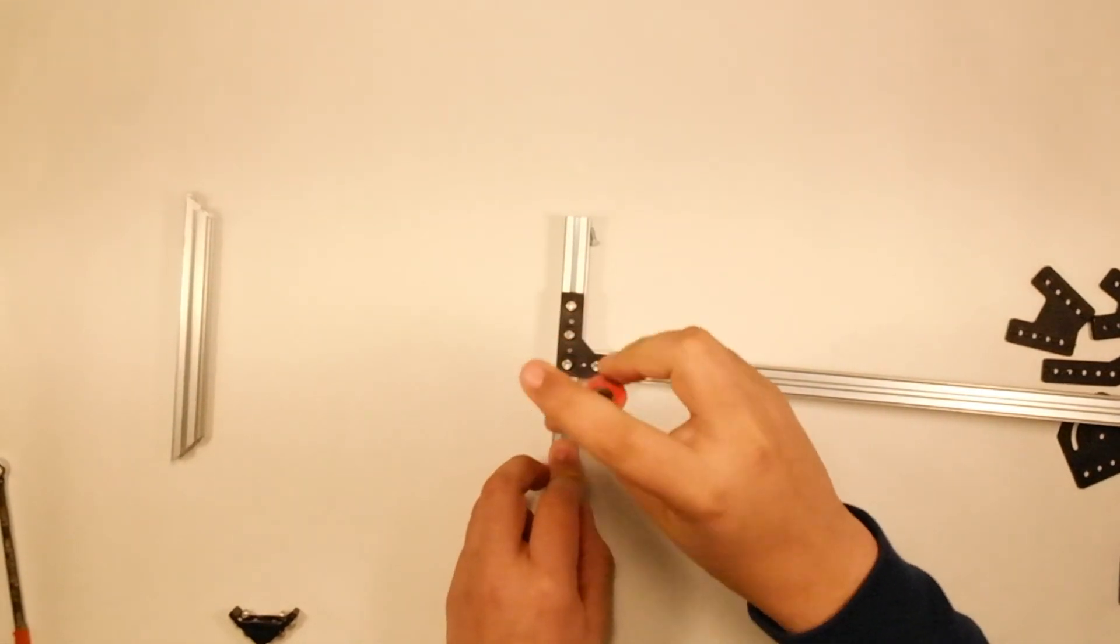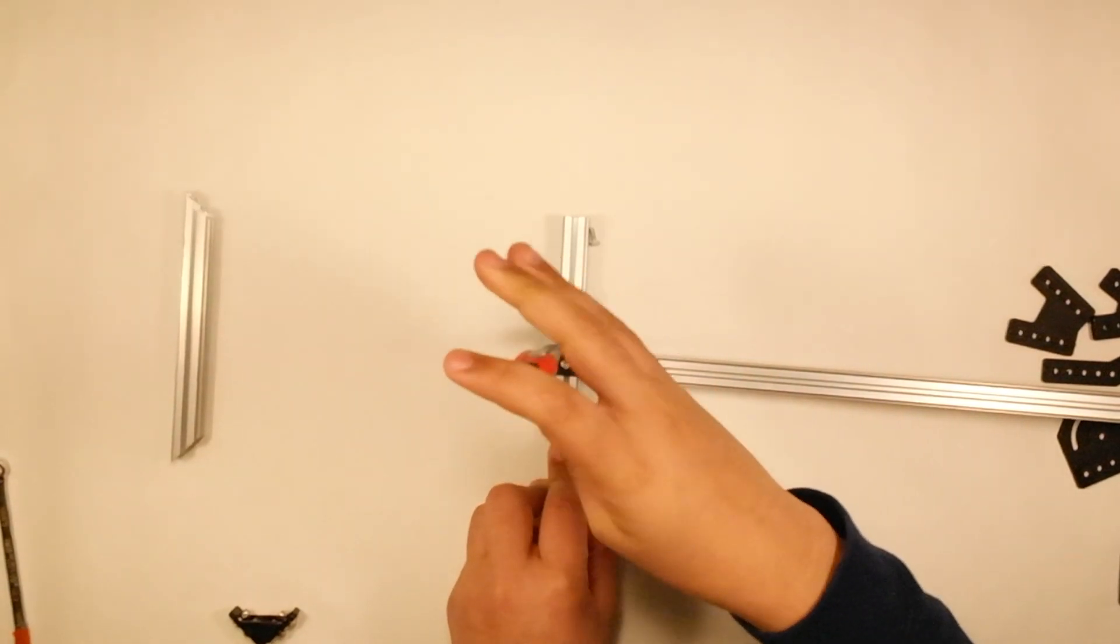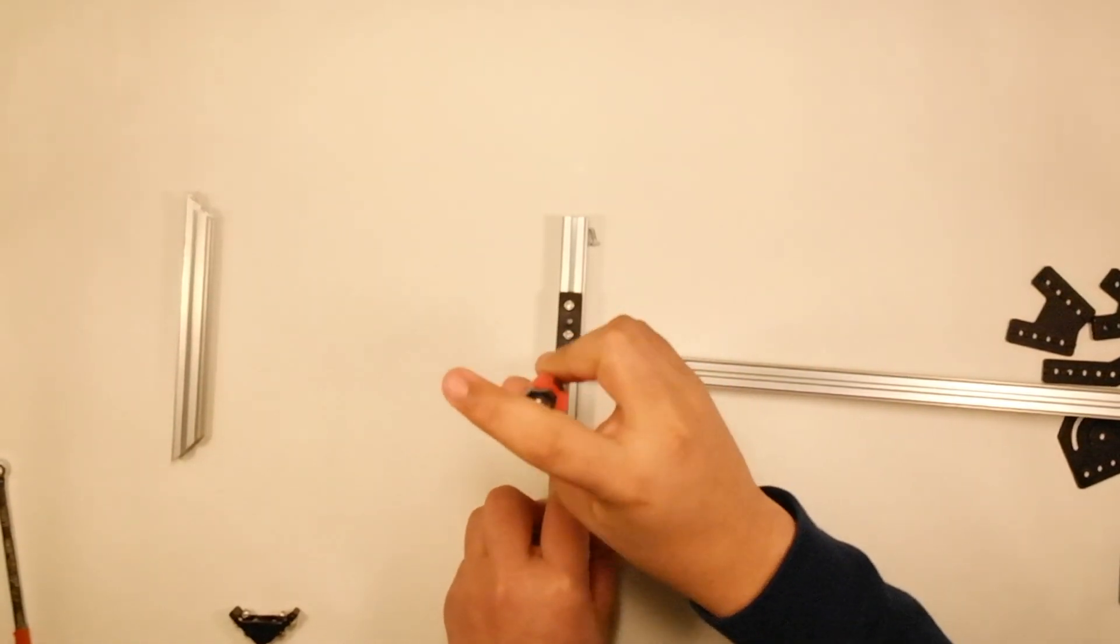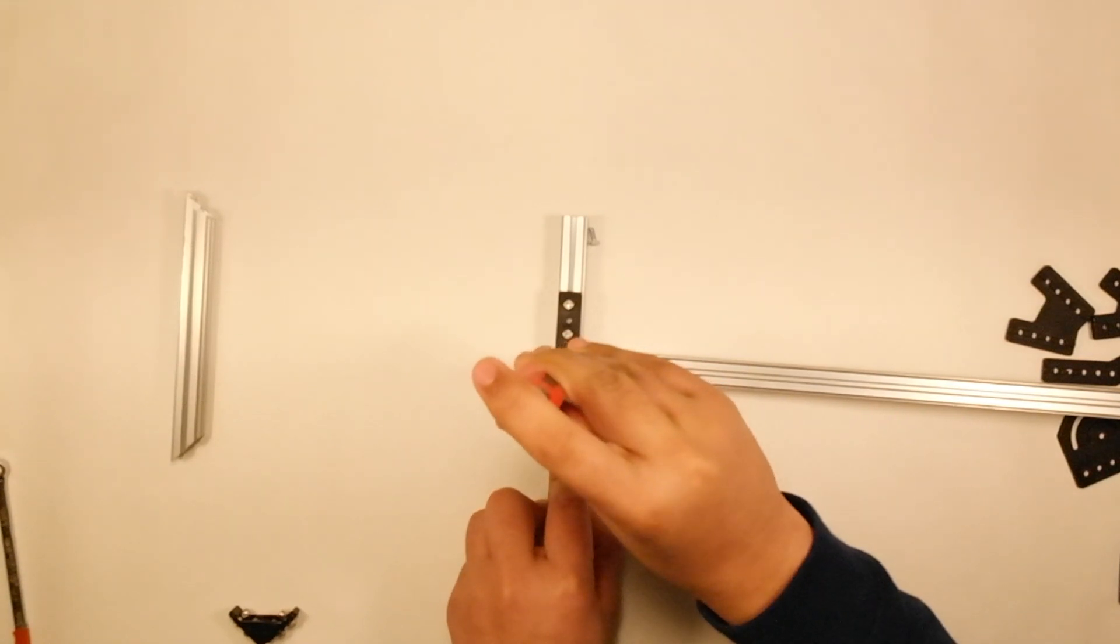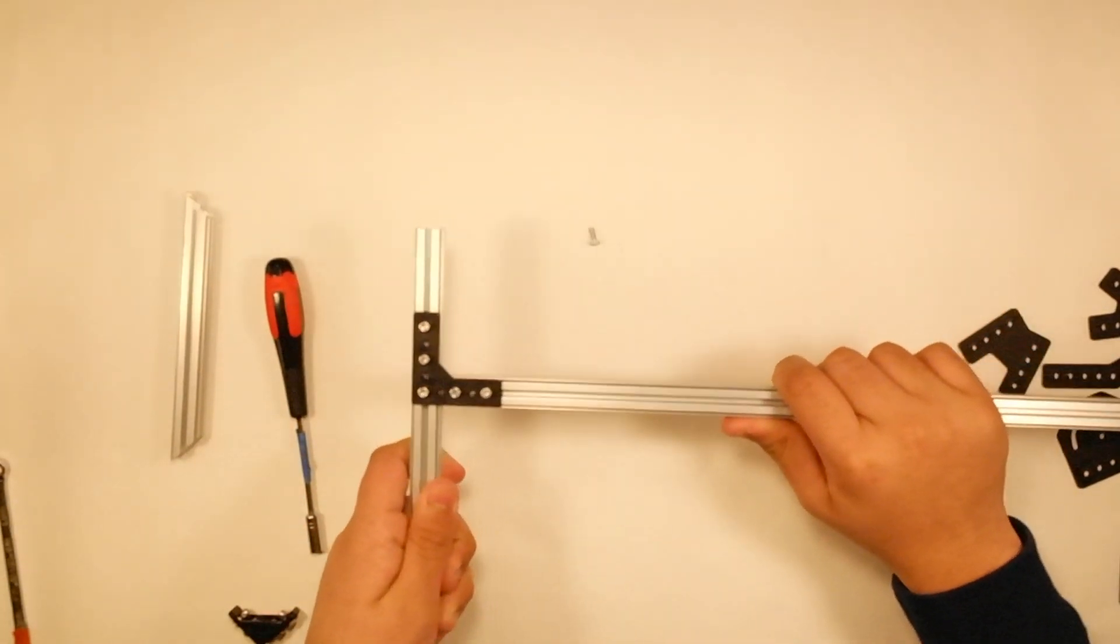One thing to note is to not tighten anything until all of your screws are in. Another thing to note is that plastic brackets have ridges on one side. This side should be flush with the REV as it helps center the plastic bracket with the REV extrusion. Now I've finished tightening these, and we have a fairly strong joint here.